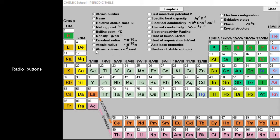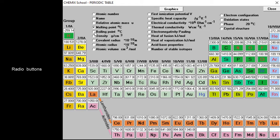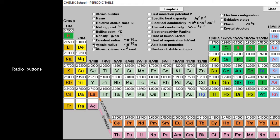The purpose of the radio buttons in the upper part of CHEMIX School periodic table is to quantitatively have the ability to compare specific properties. By pressing one of the periodic table's 22 radio buttons, we get overall information for a specific property present in the text field above each element button.